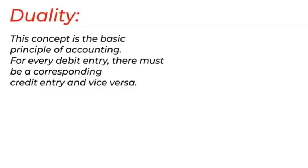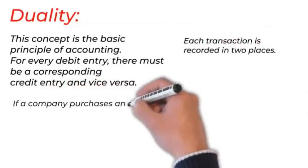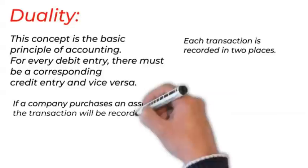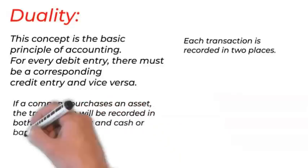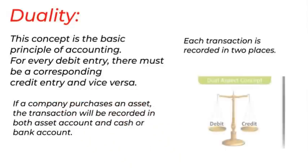Duality. This concept is a basic principle of accounting. For every debit entry, there must be a corresponding credit entry and vice versa. Every transaction will be recorded in two places. If a company purchases an asset, the transaction will be recorded in both asset account and cash or bank account.